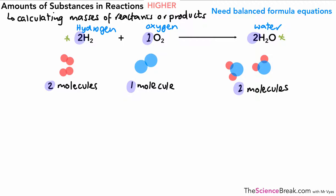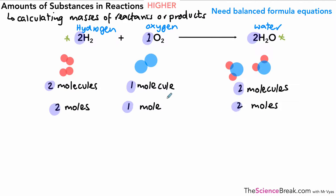We can also expand that idea to the idea of moles — we've looked at moles in a previous video — and this tells us that two moles of hydrogen react with one mole of oxygen to produce two moles of water. So again we've got the ratio of two to one to two. Not only can we look at that ratio, but we can also look at the formula masses for the different compounds.